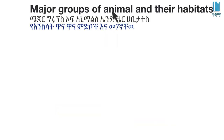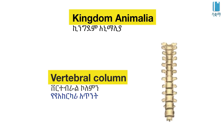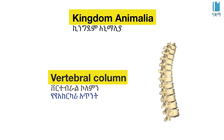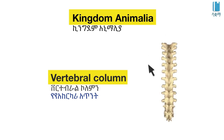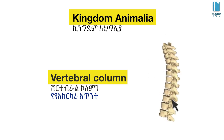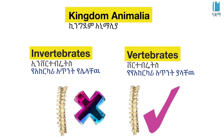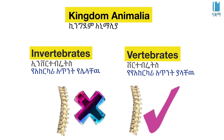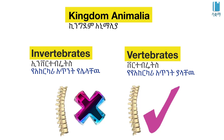Major groups of animals and their habitats. Animals in the kingdom Animalia are divided based on whether they have a spine or backbone. They are classified as invertebrates or vertebrates.